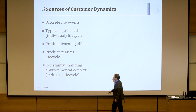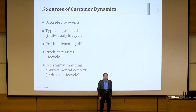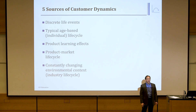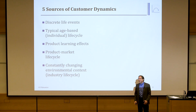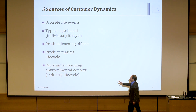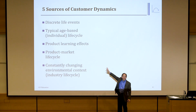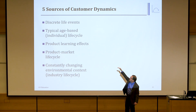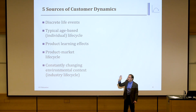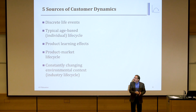The fifth source is the overall environmental context — sometimes grouped under the industry life cycle. That would be something like norms in society about the environment. If everybody's becoming more sensitive about saving energy or protecting the environment, that could change how you think about products in other categories. Overall, the bottom four sources are happening on an ongoing basis, and then there are these individual discrete events.